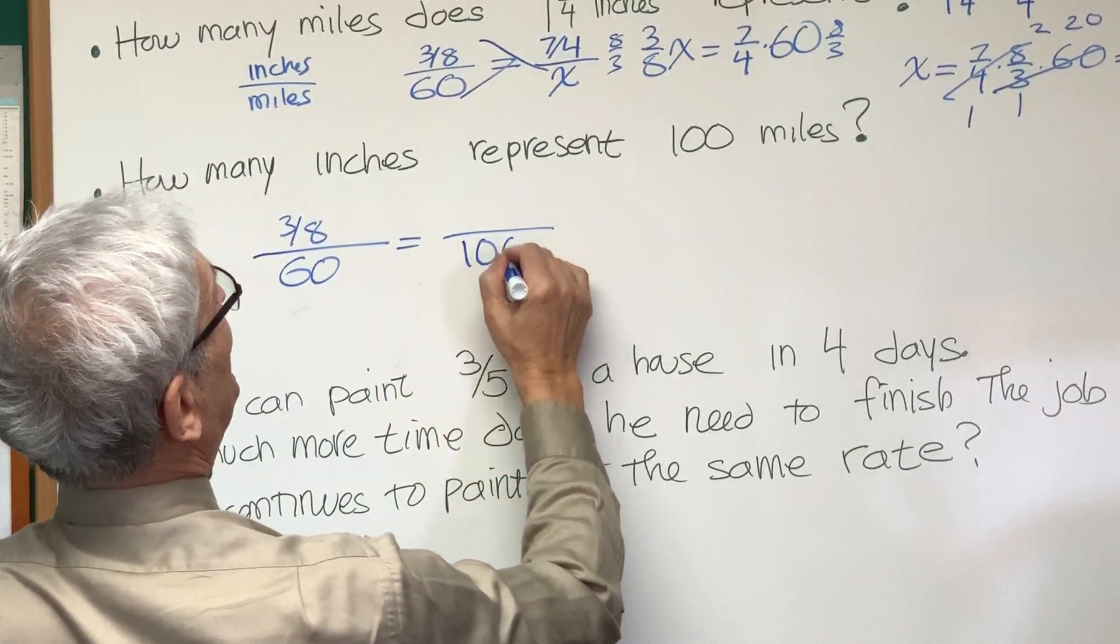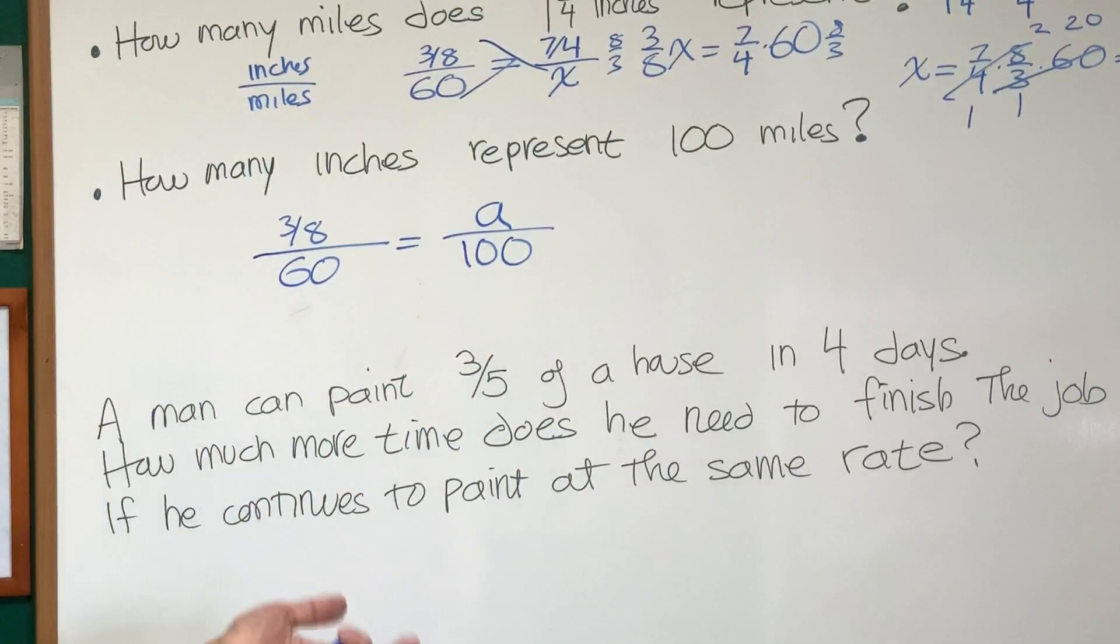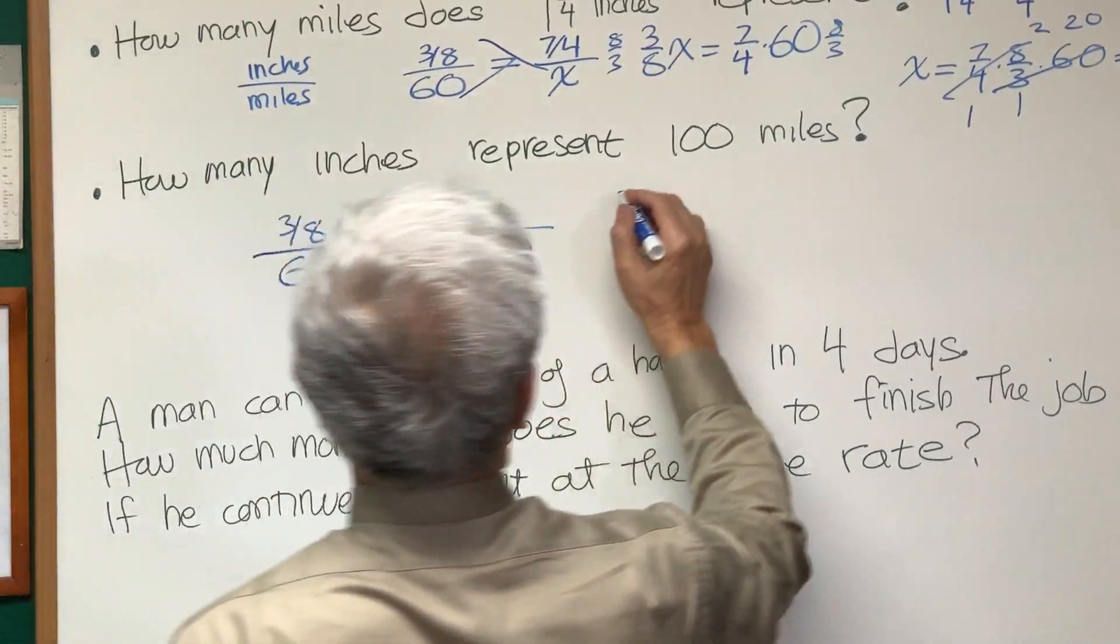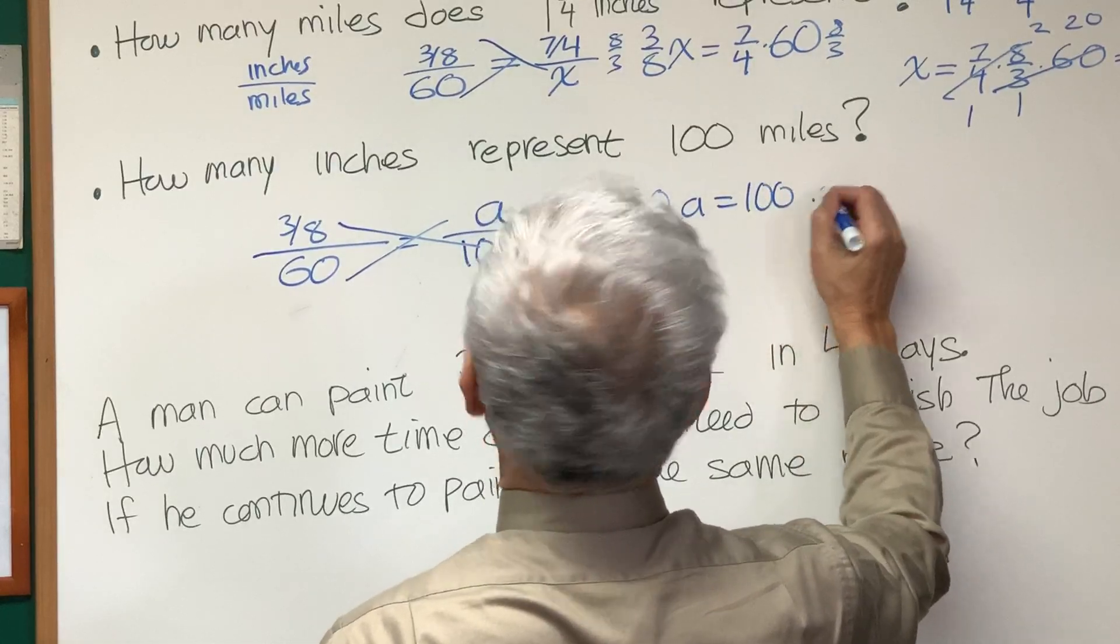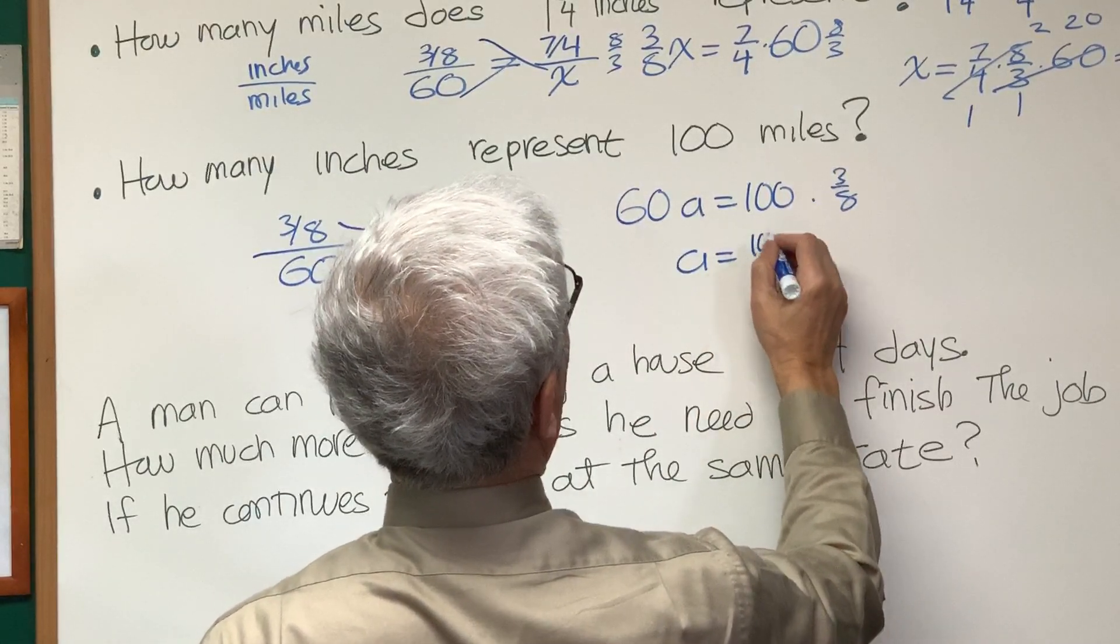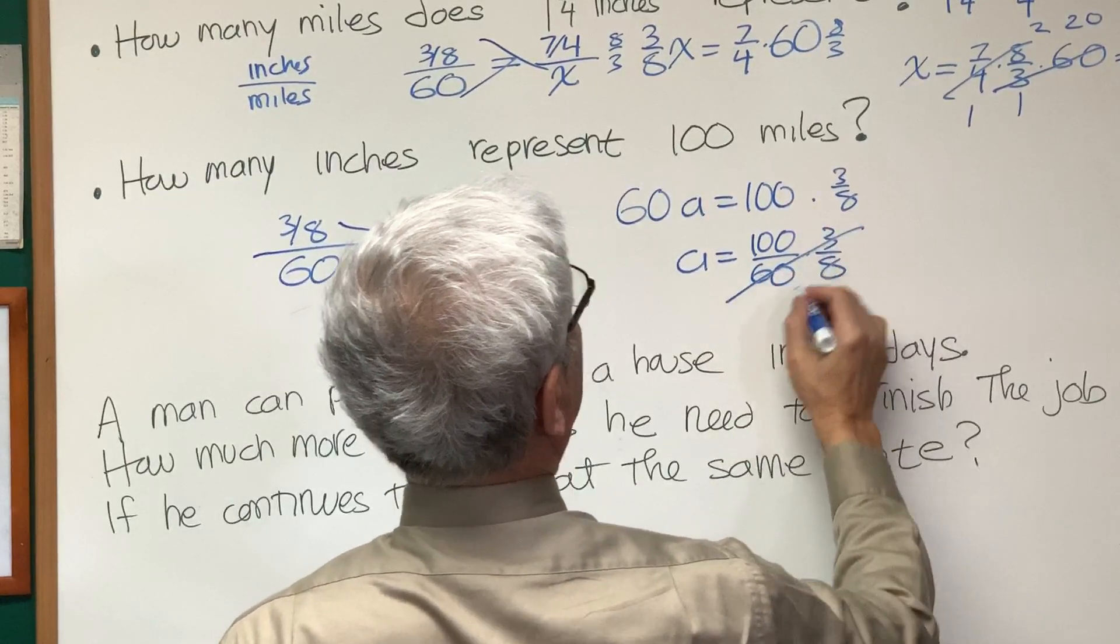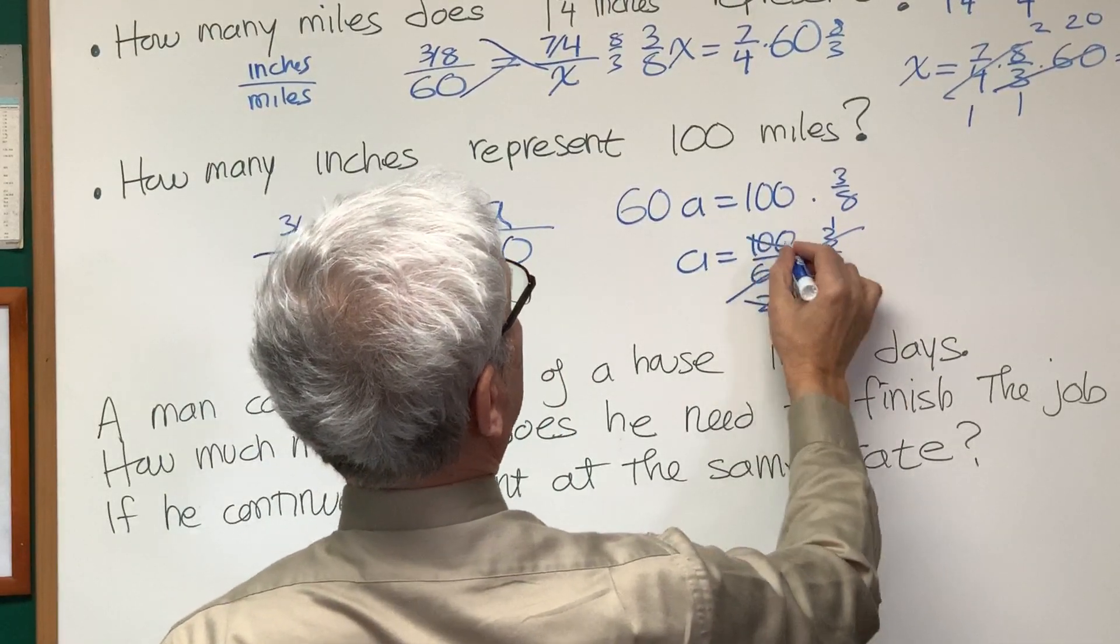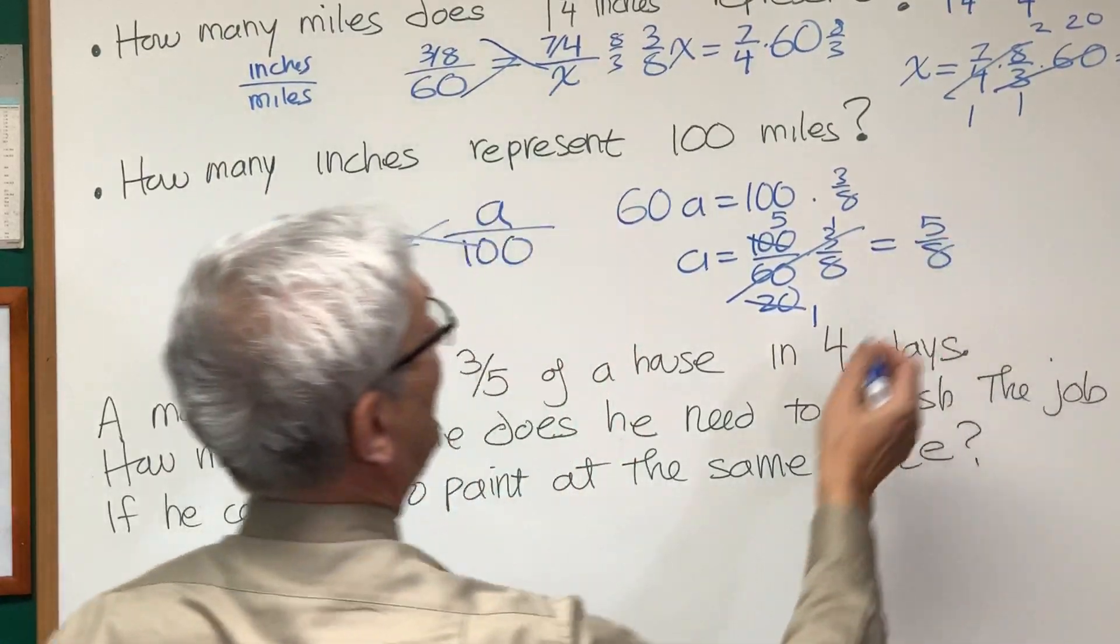And in the denominator, we'll put our hundred miles, and I'll put the variable a to represent the number of inches. Once again, cross multiplication, bada bing, bada bang. So we have 60a is equal to 100 times three-eighths. And we'll divide both sides by 60. Three goes into 60 twenty times. Twenty goes into 100 five times. And this leaves us with five-eighths of an inch.